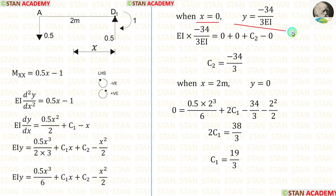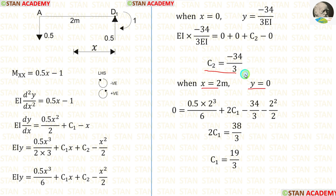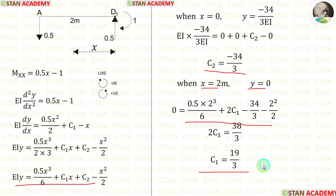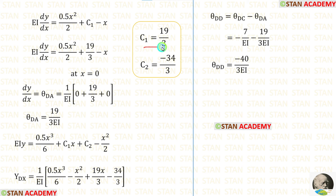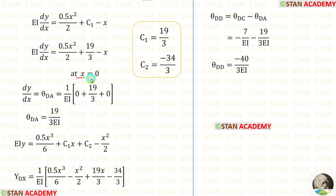When we apply these two values in this equation, we can get C2. At point A there is a vertical support, so there will be no deflection. When X = 2, Y = 0. Let us apply X = 2, Y = 0, and C2 = minus 34 upon 3. From this equation we are getting C1. Let us apply the value of C1 in the slope equation — here we need to find theta DA. At point D the value of X is 0, so instead of X we apply 0, and after applying 0 we are getting theta DA.